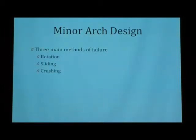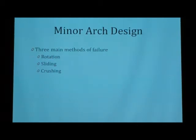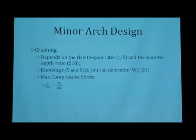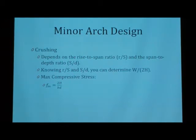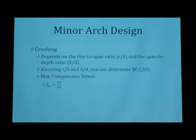So, when you do arch design, you actually have three different failure modes, generally. You have rotation, sliding, and compression. Rotation is generally neglected, because that only happens if there's tension in the system, and we assume the tension to be zero because it should be completely in compression. Sliding happens if the two different units in the arch slide past each other — we look at the friction angles. And crushing happens if it has too much compressive stress in the system. Crushing depends essentially on your rise-to-span ratio and your span-to-depth ratio. So, if you know those, you can actually calculate that on a chart, which will give you your W over 2H, where H is your thrust and W is your resultant force. It will allow you to calculate the thrust very easily if you know those two, and it will allow you to calculate the stress pretty easily as well after that.